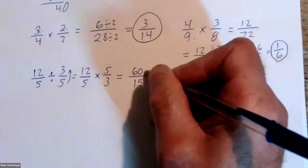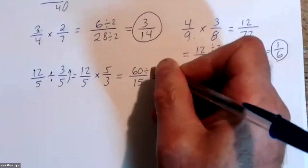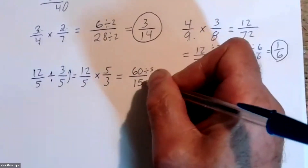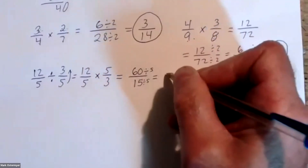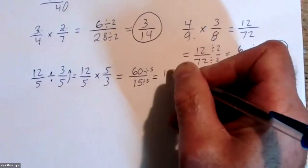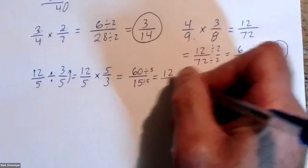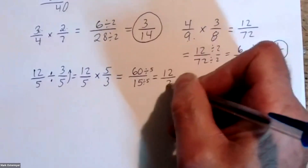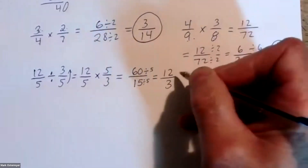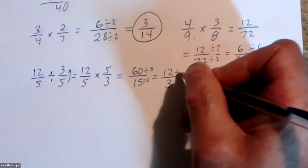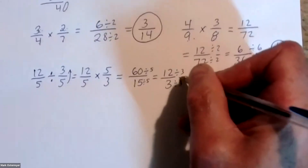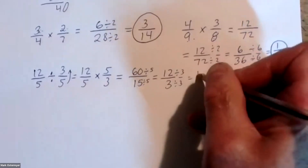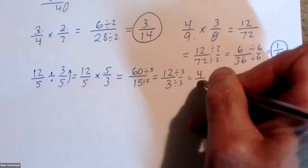...five times three is fifteen. We could reduce this down by five — five goes into sixty twelve times, five divides into fifteen three times. Then we reduce by three down to four over one, or four. Correct.